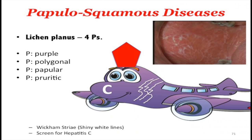Lichen planus — the four P's: purple, polygonal, papular, and pruritic. Wickham's striae are the white lines seen on lesions. Look for hepatitis C in patients with lichen planus.